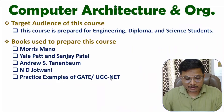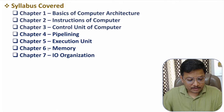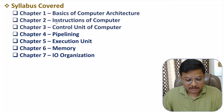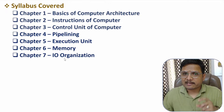If you talk about the syllabus, in total seven chapters are there. First chapter is based on basics of computer architecture. Second chapter is based on instructions of computer. Third chapter is based on the control unit of computer. Fourth chapter is based on pipelining. Fifth chapter is based on execution unit. Sixth chapter is based on memory. And seventh chapter is based on IO organization.